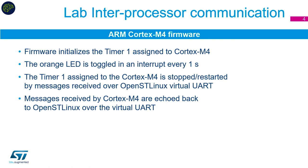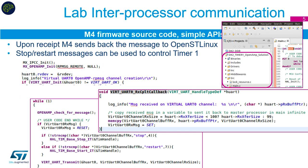We're going to initialize Timer 1 again — the same timer as before — but this time use an orange LED to toggle instead of the green LED. The orange LED is on a different location on the board, on the top side near the buttons. Timer 1 is assigned to the Cortex-M4 and will be stopped and restarted by messages received through the virtual UART from the A7 side. We can also send echo messages from the M4 back to the A7 over the virtual UART.